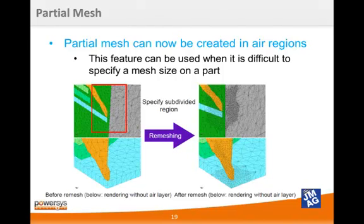It is also possible to apply a mesh condition to a region. In this example, we are modeling a recording head and we want to make a finer mesh where the head and the plate touch. Previously, we would have had to set the mesh condition on each of the components, which would have led to a fine mesh across the entire component. Now we can use a free form selection tool to select the region of interest and set a finer mesh only in that area, thus reducing the total number of elements needed but increasing the accuracy at the same time.